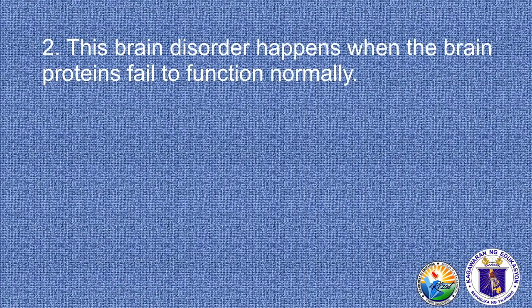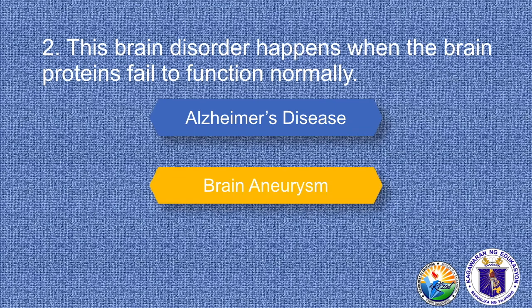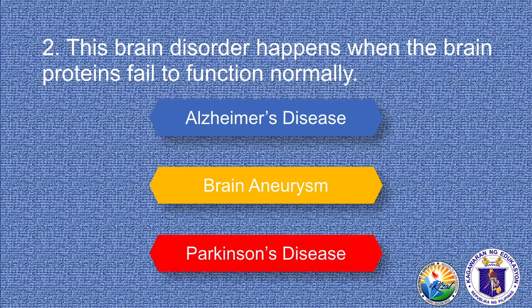Number two: this brain disorder happens when the brain proteins fail to function normally. Is it Alzheimer's disease, brain aneurysm, or Parkinson's disease? Absolutely, it's Alzheimer's disease.